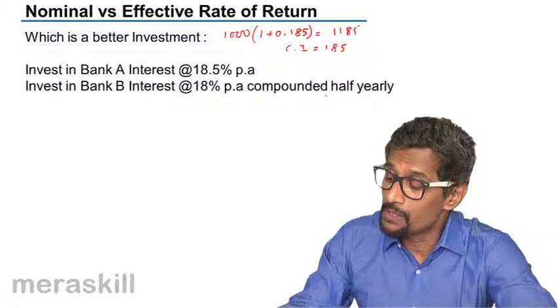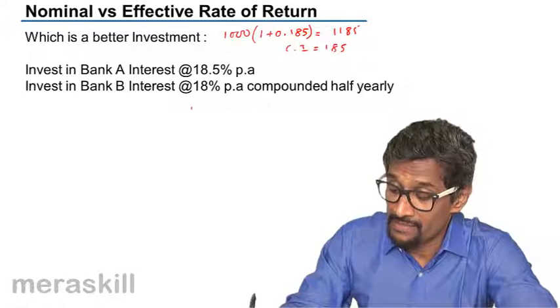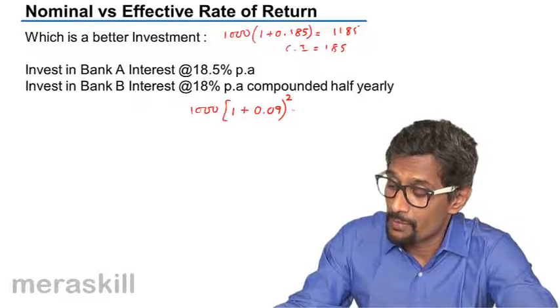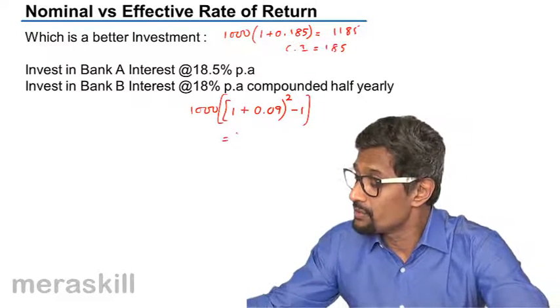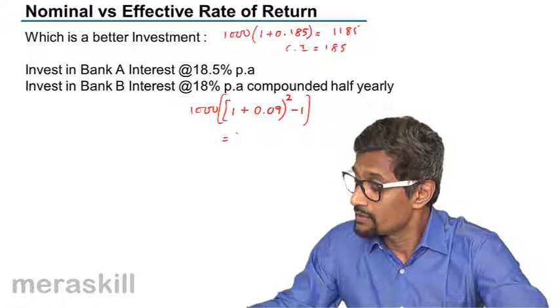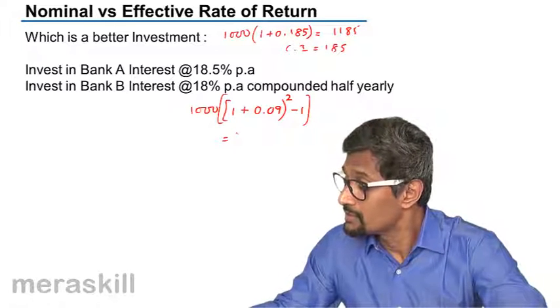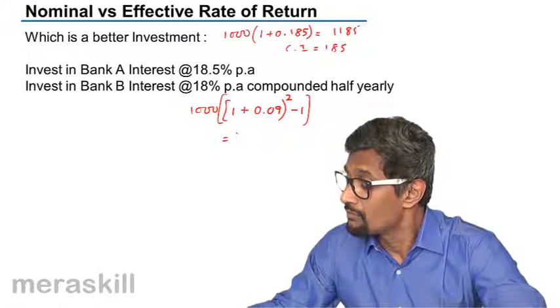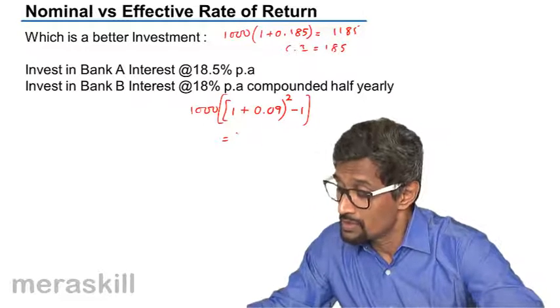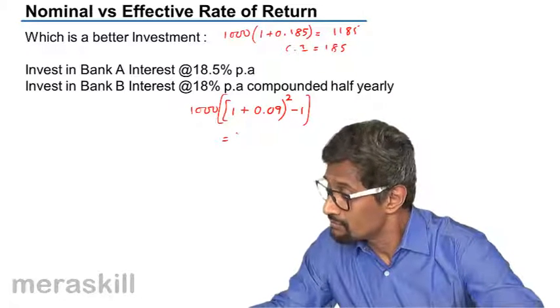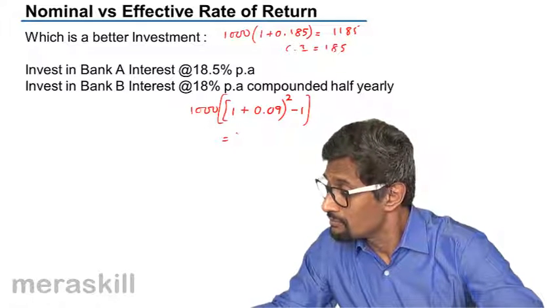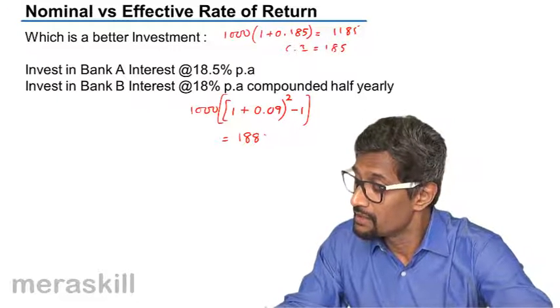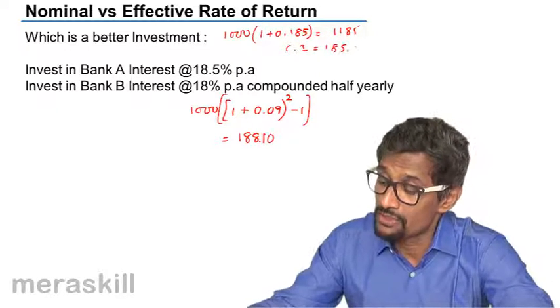And the compound interest would be 185, obviously. Suppose it is 18% per annum compounded half yearly. In that case, it's going to be 1,000 into 0.09 raised to 2 minus 1, of course. So you get around 188.10.